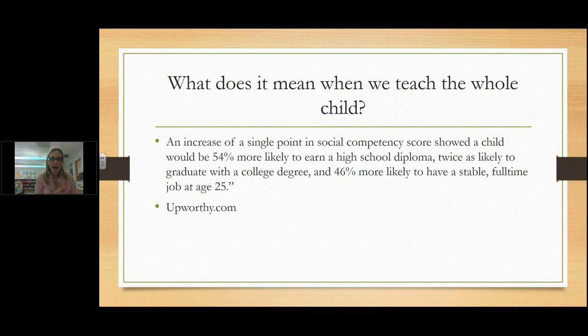What does it mean when we say we teach the whole child? When we teach the whole child, 54% of students are more likely to earn a high school diploma, twice as likely to graduate with a college degree, and 46% more likely to have a stable full-time job at 25 — when we teach social, emotional, and academic skills. In my teaching prep programs, they focused very much on academics and not so much on psychology. I was glad when I found the Momentus Institute, because they clearly articulated why it's important to talk about emotions and feelings.